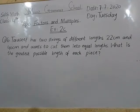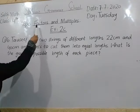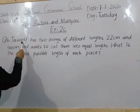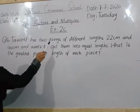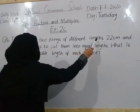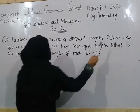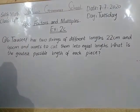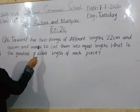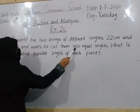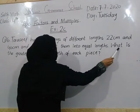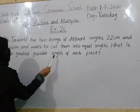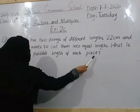Hello students. Subject: Math, Class 4. Topic: Factors and Multiples. Question number 6 — a person has 2 strings of different lengths, 22 cm and 40 cm, and wants to cut them into equal lengths. What is the greatest possible length of each piece?